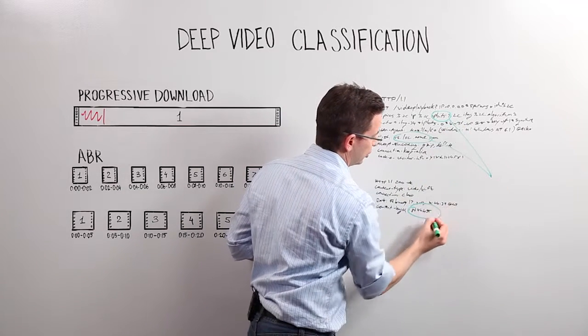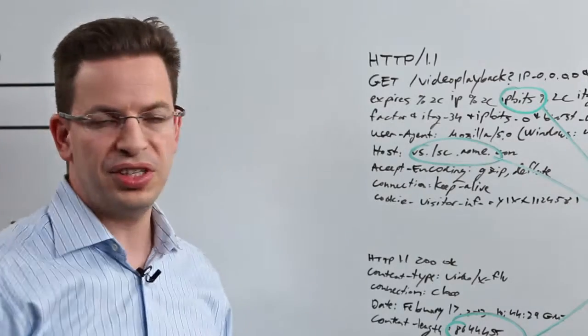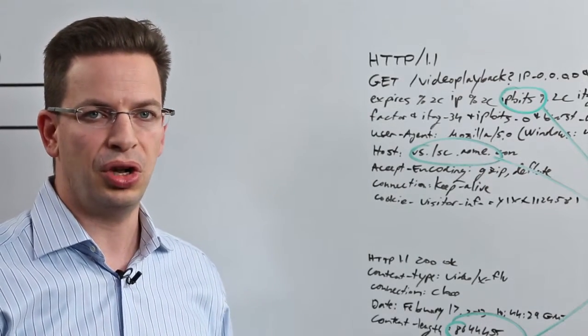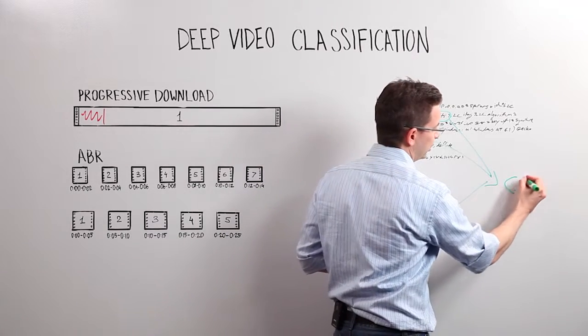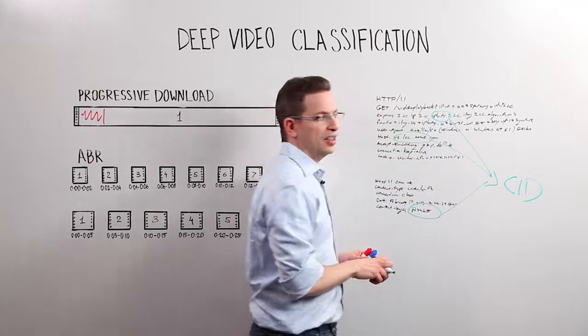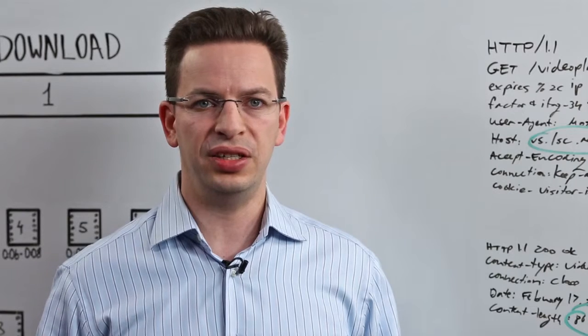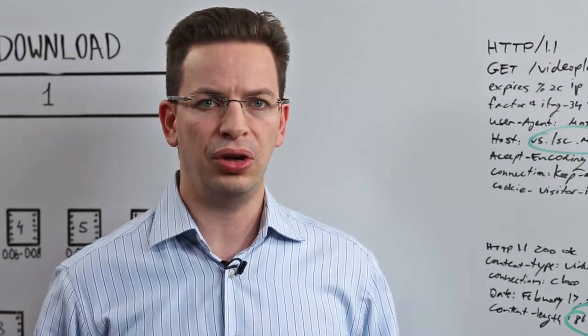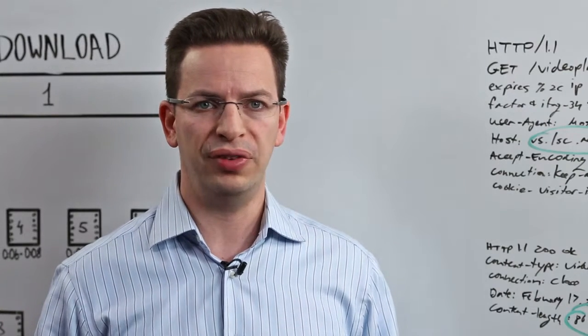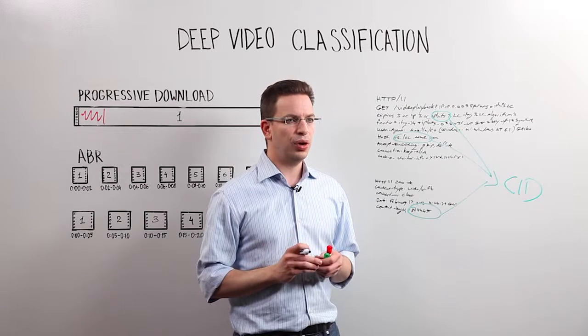We combine those several fields and every single video site has what we call a different video signature and we create what we call a CID or a content identifier. So we use that CID for next chunks of that same video flowing through the system. We know how to allocate them and we know that they belong to one video file.